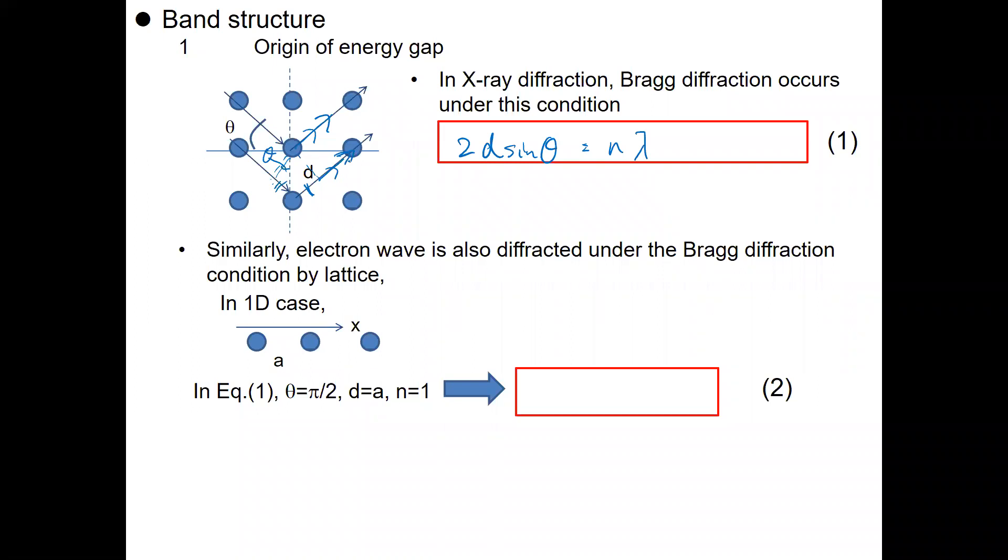And similarly, when we think about the electron wave, the electron wave, as we discussed in the previous lectures, is also diffracted under the Bragg diffraction condition by the lattice. The lattice means the periodical potential from positive charges.